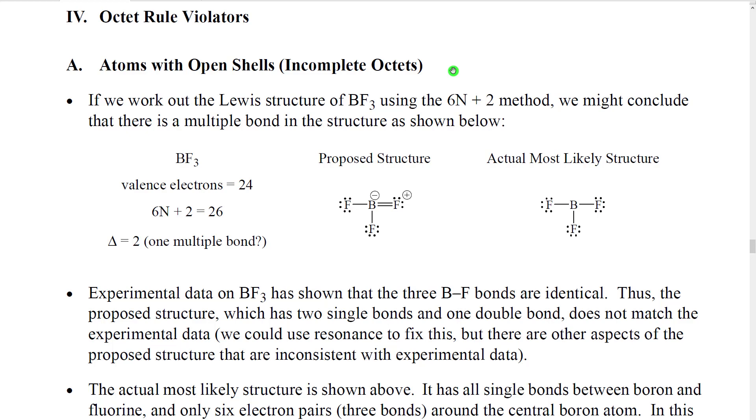I'm going to show this to you with an example. I'm going to skip through all the details here. You're going to have to work it out for yourself. Here's the formula, BF3. So, BF3 has 24 valence electrons. When we calculate 6n plus 2 for this, we get 26. So that shows that we have delta equals 2. So in theory, we could say one multiple bond.